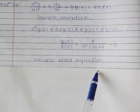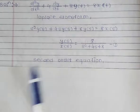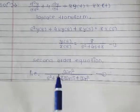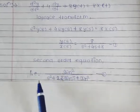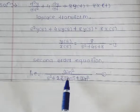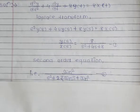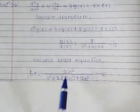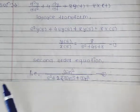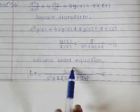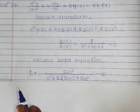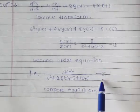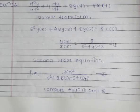Now we compare this equation with the standard second-order equation, which is: ωn²/(s² + 2ζωn·s + ωn²). Keep this standard second-order equation in mind — this is equation number 2. You have to compare equation 1 and equation 2 to find out all the required parameters.